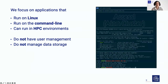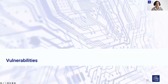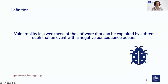To be clear on which type of applications I will be talking about: these are applications that run on the Linux command line in HPC environments. These applications typically do not have any user management, and they also do not manage any data storage. Now, looking at these types of applications, what are typical vulnerabilities or weak points they have? According to the ISO, a vulnerability is a weakness of the software that can be exploited by a threat such that an event with a negative consequence occurs. This includes not only bugs but also design flaws.